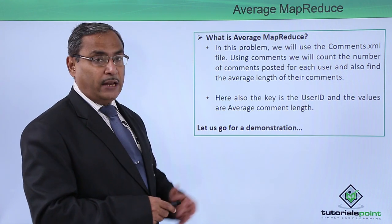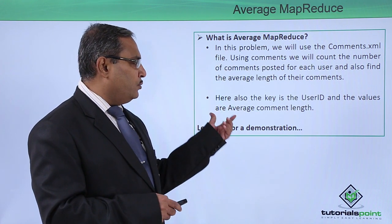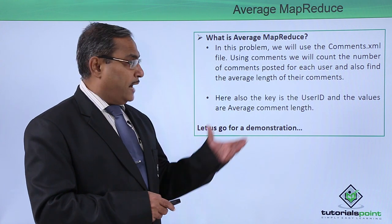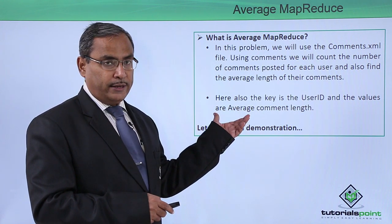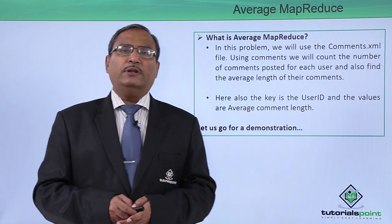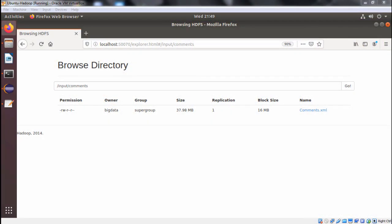So that will get calculated here. The key is the user ID and the values are Average Comment Length — that will be the output we will be going to get. Let us go for one practical demonstration for the easy understanding of this concept. Here we are implementing the average count MR task, which is falling under the summarization design pattern.